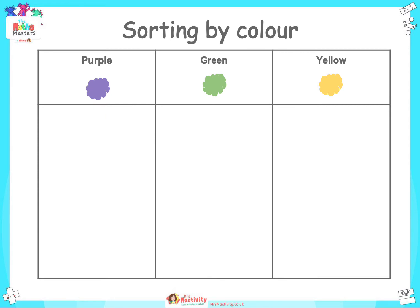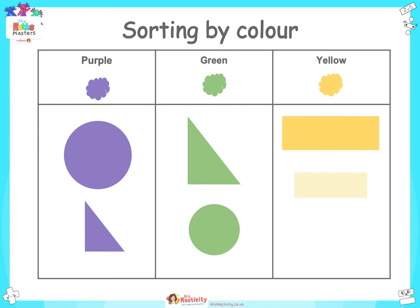He is going to sort them by colour. All of the shapes have been sorted and none have been left out. How many groups have been made? Write your answer in the air with your finger. There are three groups. Could Walter have sorted the objects in a different way? He could have sorted them by shape or by size.